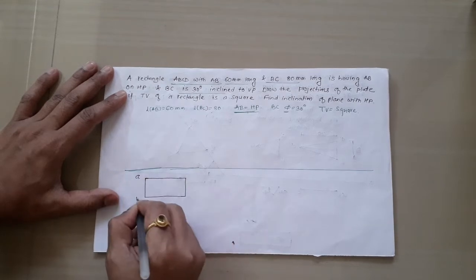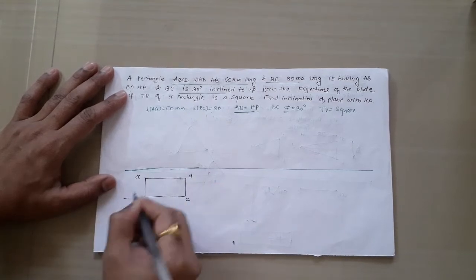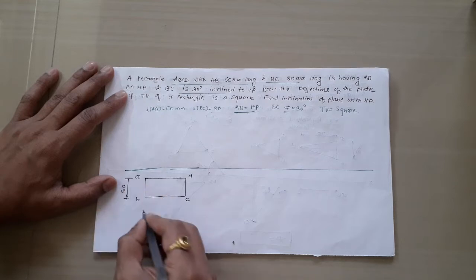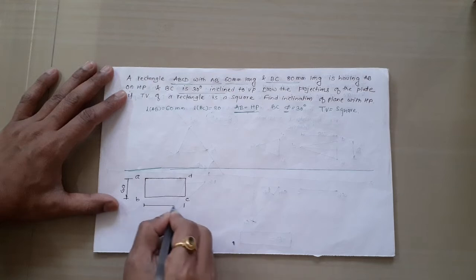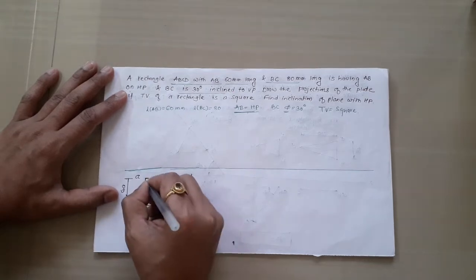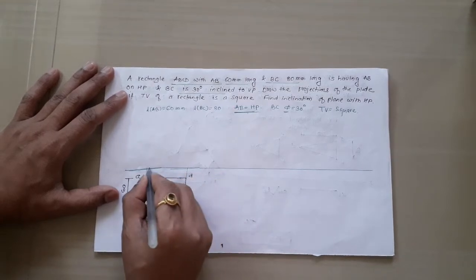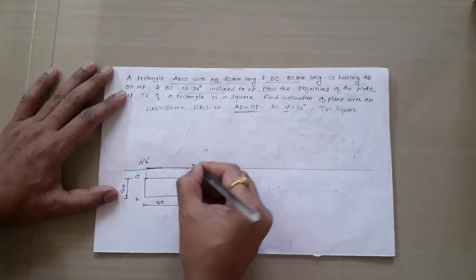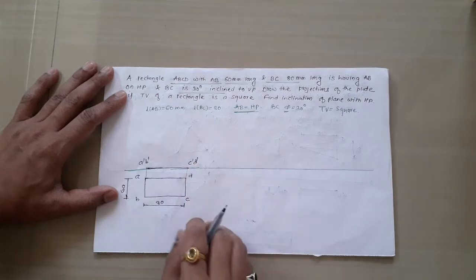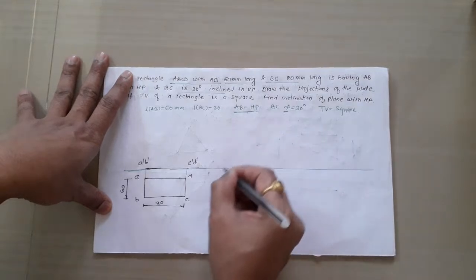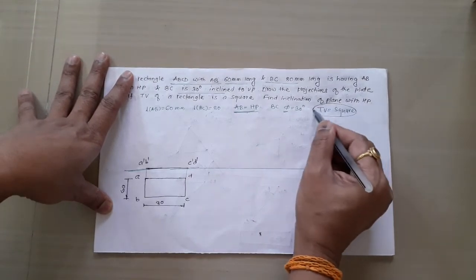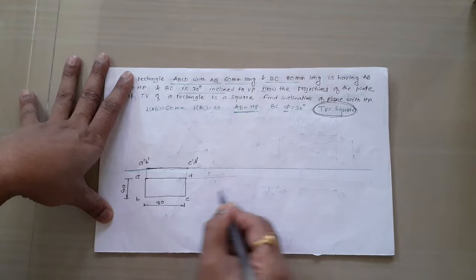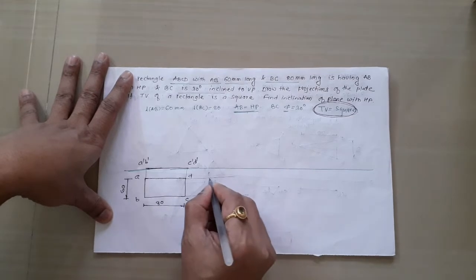Draw rectangle ABCD where AB is 60mm. Take the projections in the upward direction and draw the front view of this rectangle on the reference line, because AB is on HP. We assume the complete plane is in HP initially. In the second stage, surface inclination is not given — instead it is given that the top view is a square. So we skip the surface inclination step and draw the reduced shape in the top view by taking projection of the previous stage.